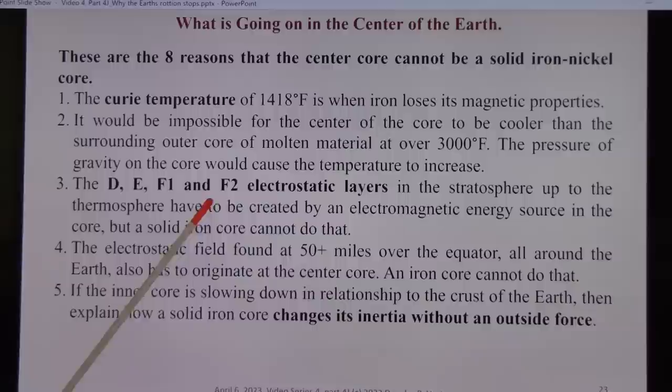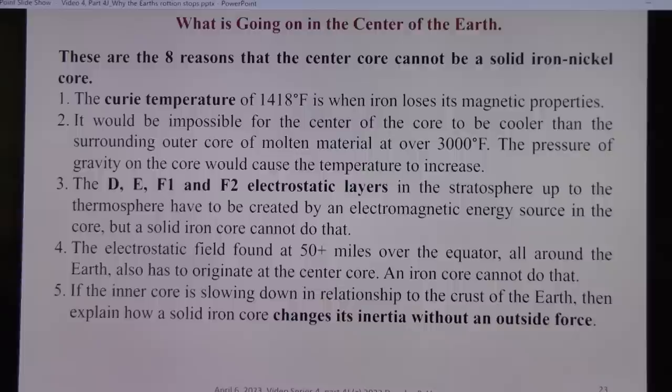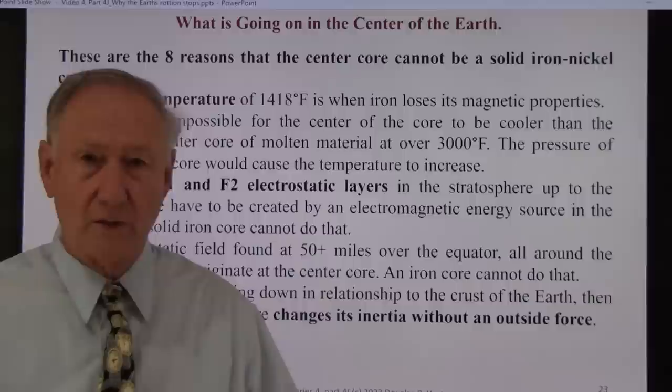The DE, F1 and F2 electrostatic layers in the stratosphere up to the thermosphere have to be created by an electromagnetic energy source in the core. But a solid iron core cannot do that. Unless it has an outside force that's oscillating it. They don't want to go near that. There's also an electrostatic field found 50 miles plus over the equator, all around the Earth. It also has originated at the center core, and an iron core cannot do that.